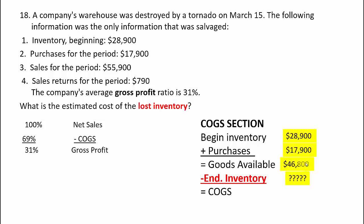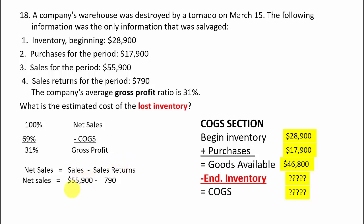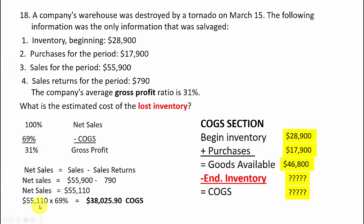We don't know ending inventory or cost of goods sold, but we can figure them out. We need net sales first. Gross sales were $55,900 minus sales returns of $790 gives net sales of $55,110. Taking 55,110 times 69% cost of goods sold percentage gives an estimated cost of goods sold of $38,025.90.